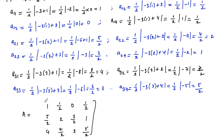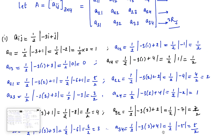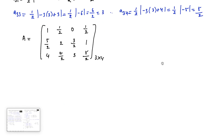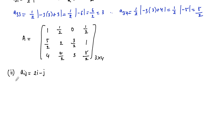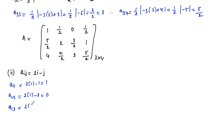This is the required matrix for the first problem — 3 rows and 4 columns. For the second one, A_ij = 2i − j. So A11 = 2×1 − 1 = 1, A12 = 2×1 − 2 = 0, A13 = 2×1 − 3 = −1, and A14 = 2×1 − 4 = −2.